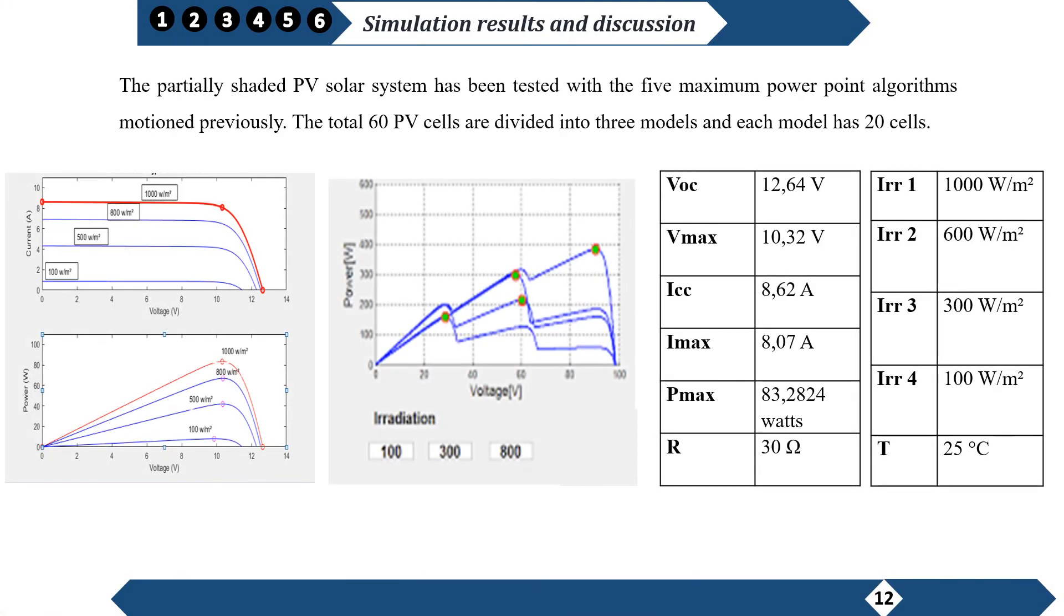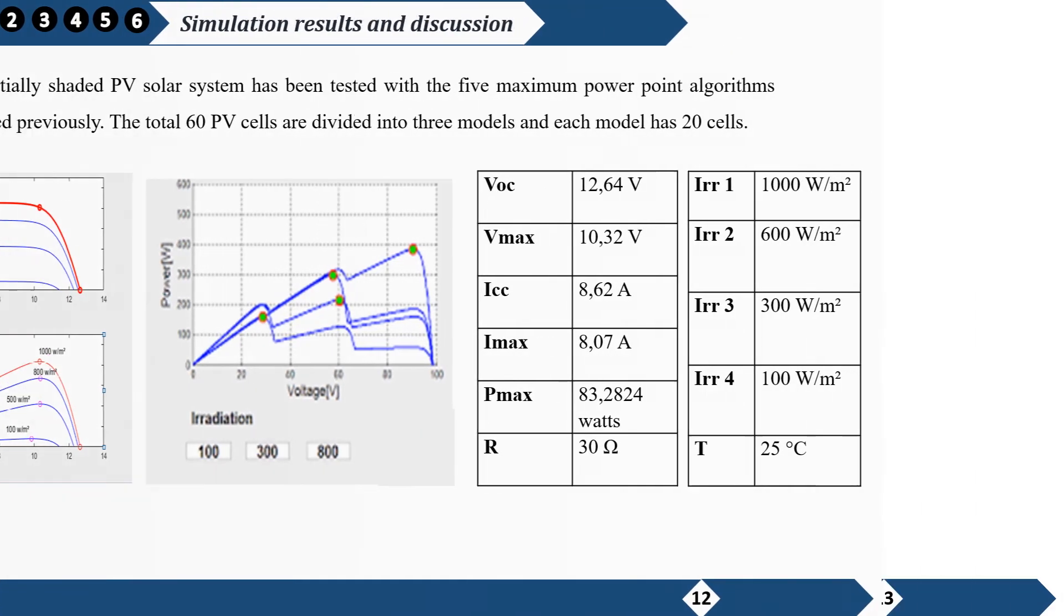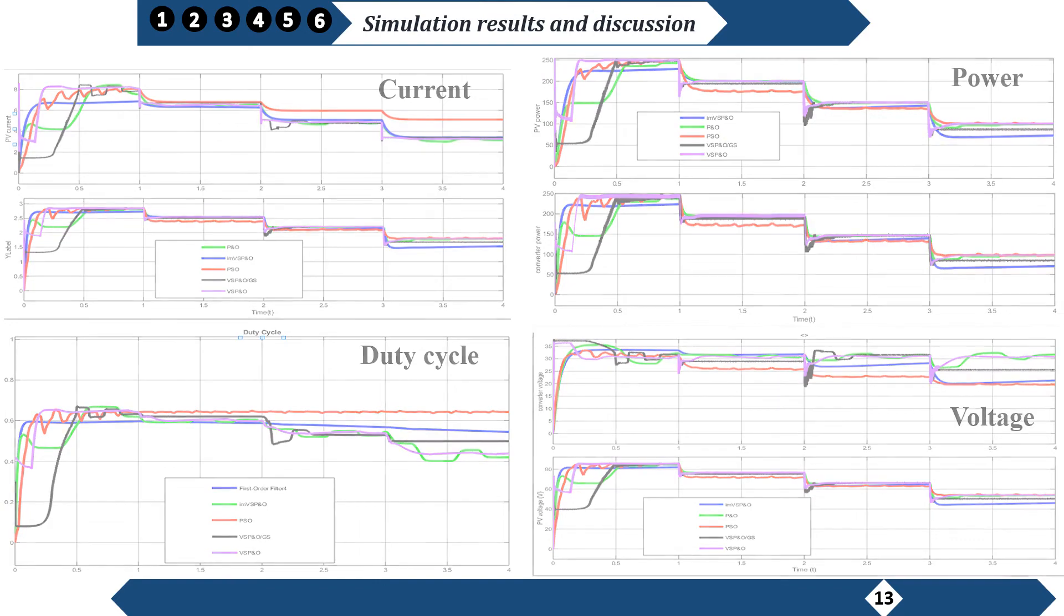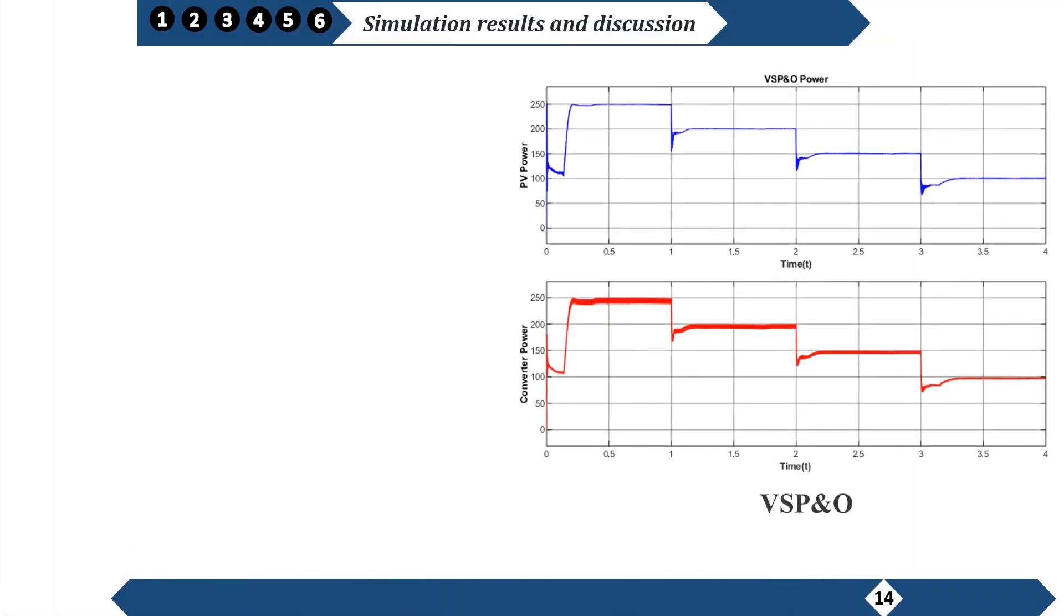The state of values that characterize the equivalent circuit of PV cells and the meteorological conditions are reported in this table. This figure represents respectively the power, voltage, currents, and the duty cycle of the PV panel and the converter.